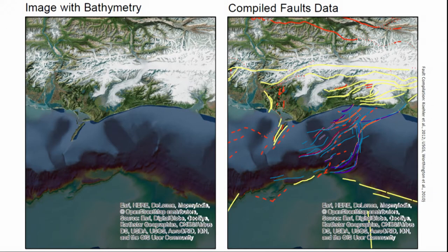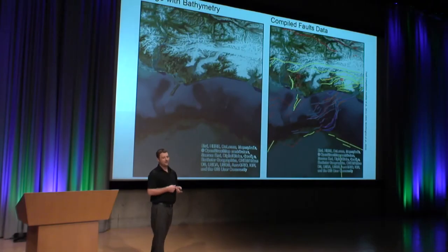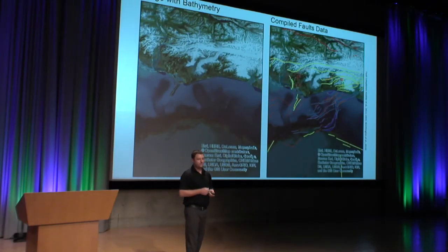I started out exploring the data, looking at the bathymetry. It looked like it matched up pretty well with the faults, which spawned my first mini project exploring this bathymetry. The dataset I used is Smooth Sheet Bathymetry by Zimmerman. On the right, I compiled fault data from my advisor's work, the USGS, and a couple of other sources. The different colors are different fault sets.